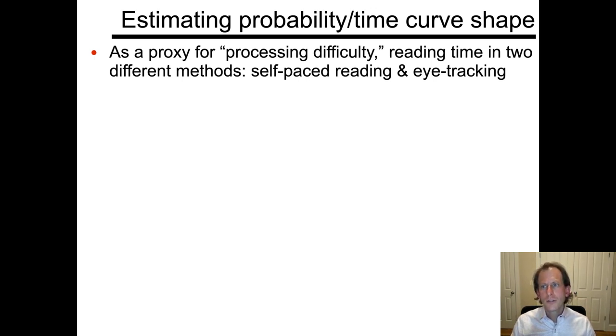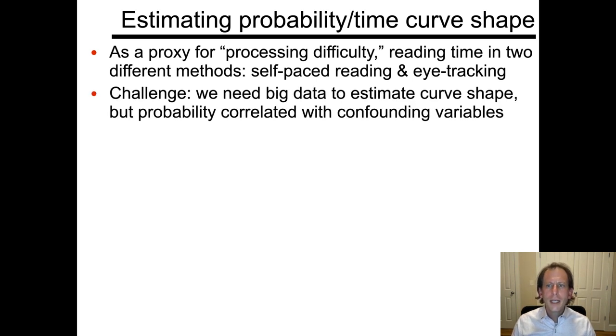This is a study that uses reading time in two different methods, self-paced reading and eye tracking. What we need in order to do this is we're going to use what are called non-parametric statistical techniques that allow us to reveal the shape of a relationship between one variable and another in a data set. The variables of interest are going to be probability or log probability and time. But we have to take into account that there are other kinds of variables that are going to be in the mix as well.